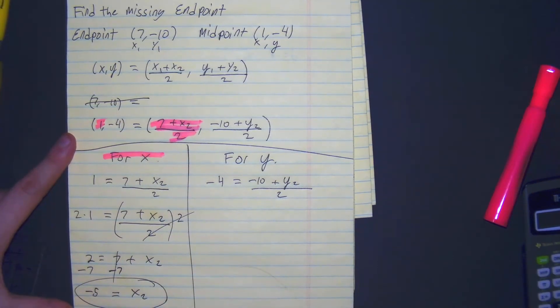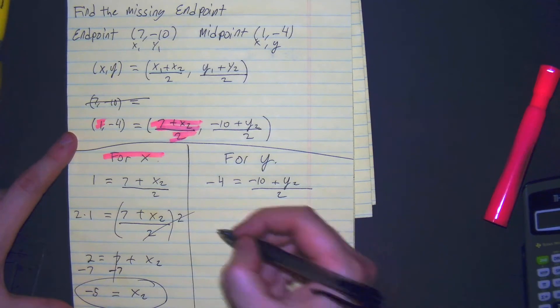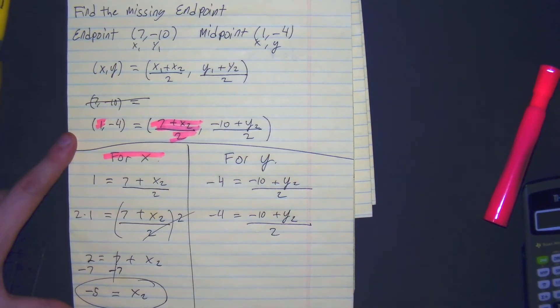That's our first coordinate of the endpoint. Now we just need to know the y, the altitude of this point. So rewrite it so we can just show our steps clearly. Negative 4 is equal to negative 10 plus y sub 2 divided by 2.